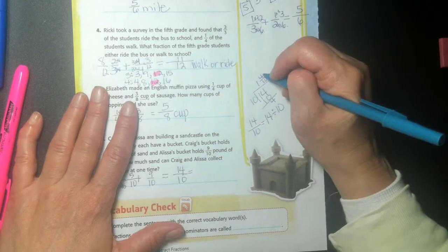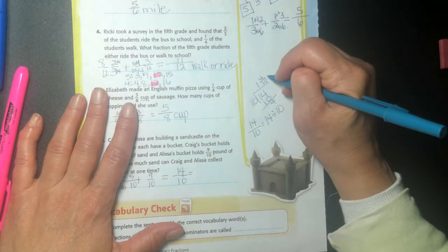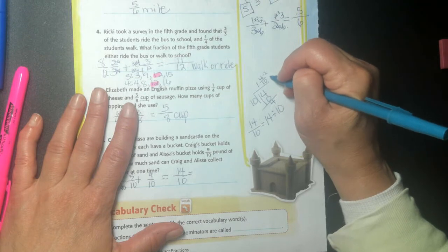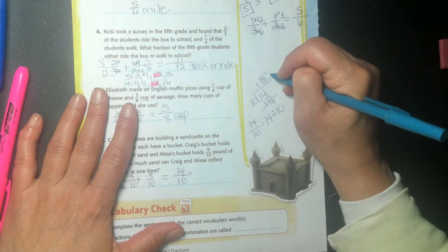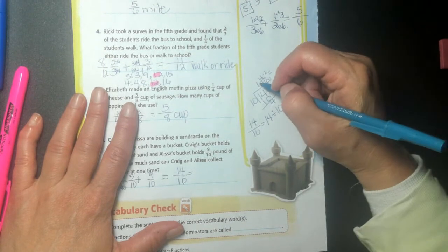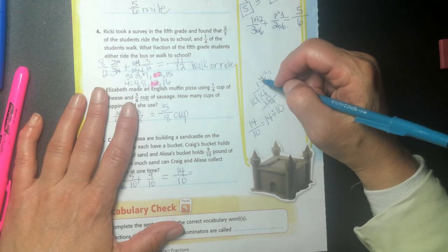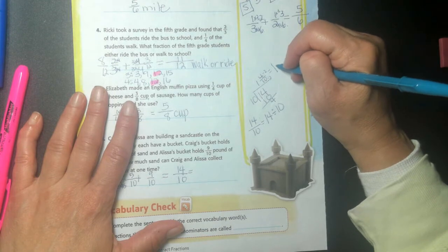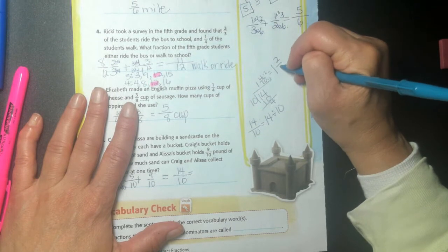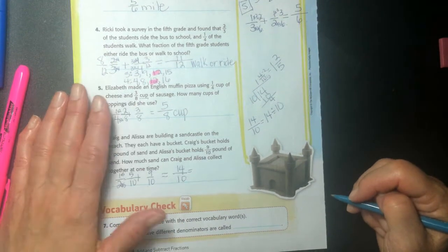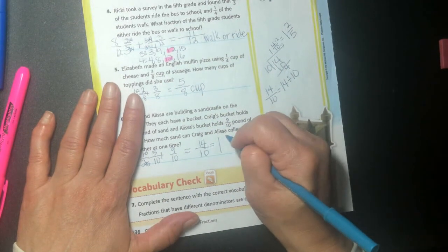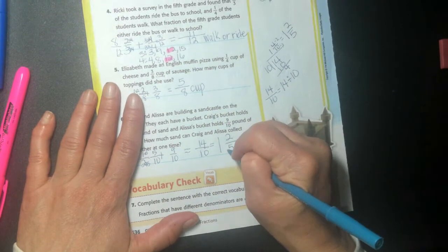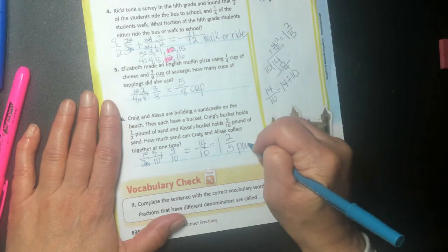We still have to divide by two here, right? So I'm going to divide the top by two and the bottom by two to get to my least common factor. My greatest common factor. Sorry. So I'll have one, four divided by four is two, and ten divided by two is five. So my answer is one and two fifths pound of sand.